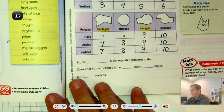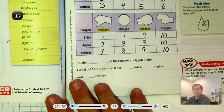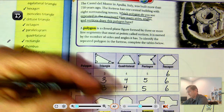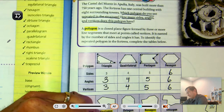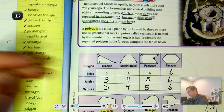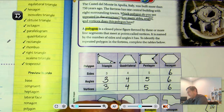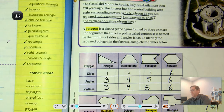The repeated polygon in the Castel di Monti had eight sides, so that is an octagon. It has eight sides, eight angles, and eight vertices.